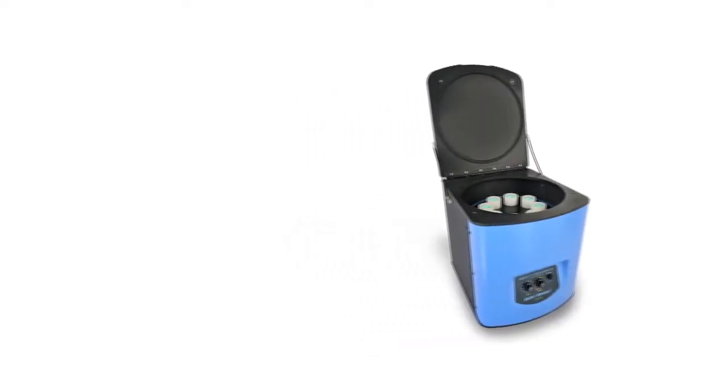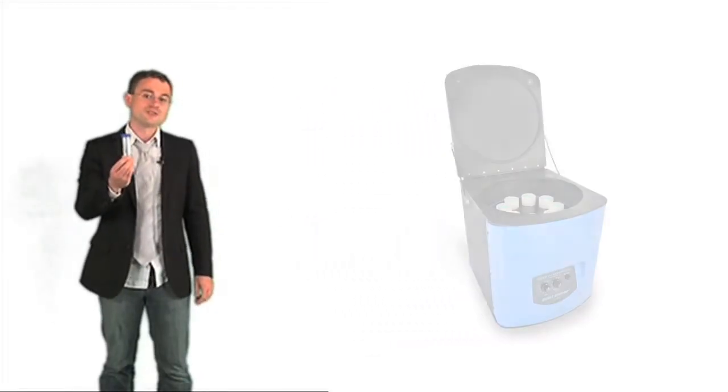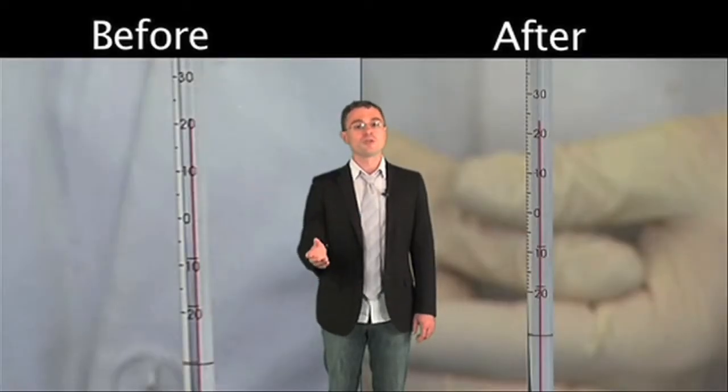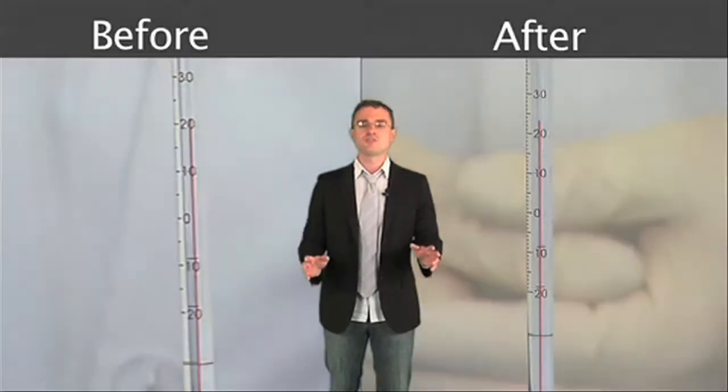We also have a model that uses standard 50 milliliter tubes for larger samples. The Bullet Blender uses an innovative technology to keep your samples cool while they're being homogenized. Temperatures rise just a few degrees.